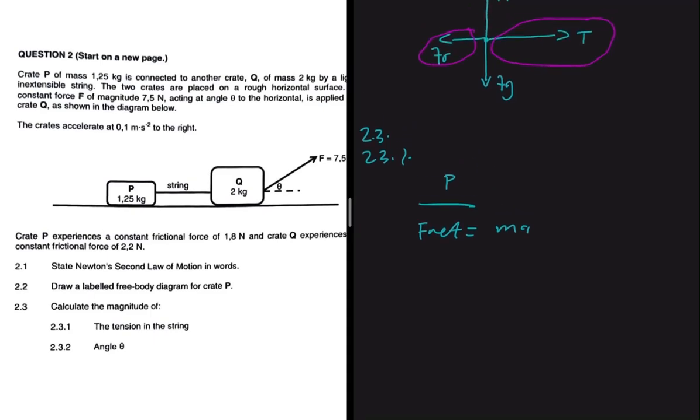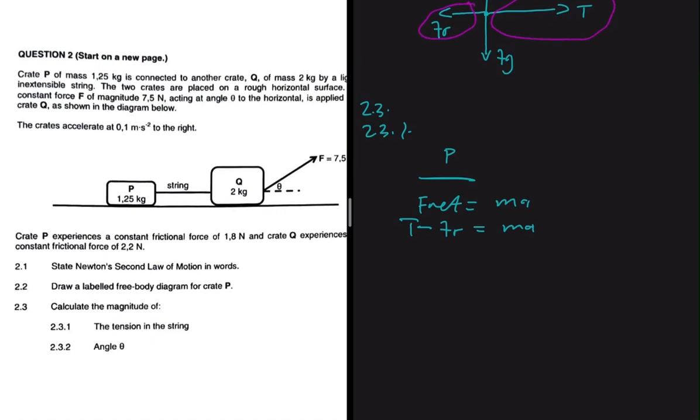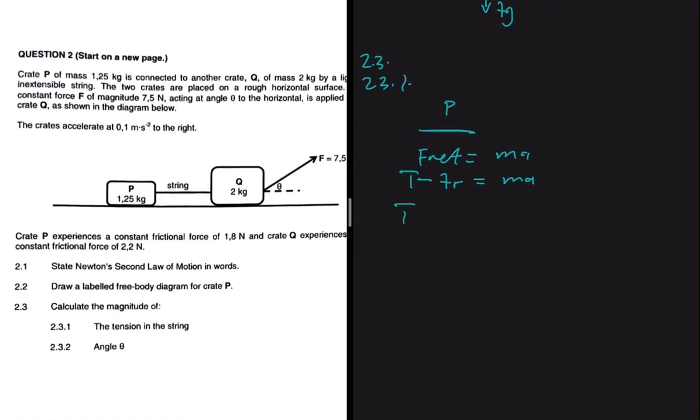We've already established that the tension is greater than the friction, so we must have tension minus all the smaller forces. We only have friction opposing, so minus Fr equals ma. We're only considering the forces along the horizontal and not the vertical. So we have tension minus the frictional force that acts on crate P, which is given as 1.8.